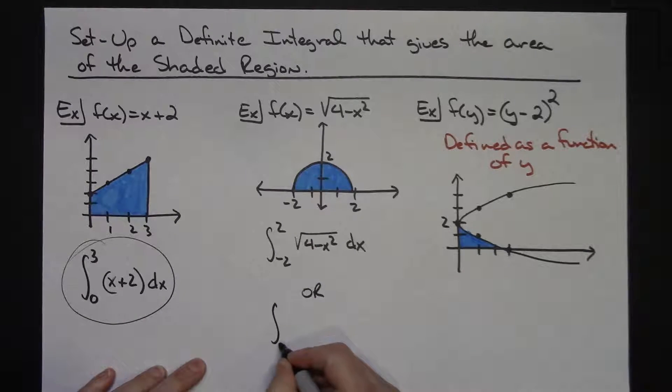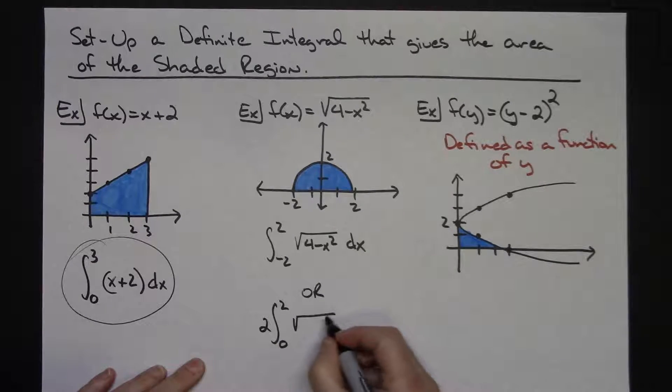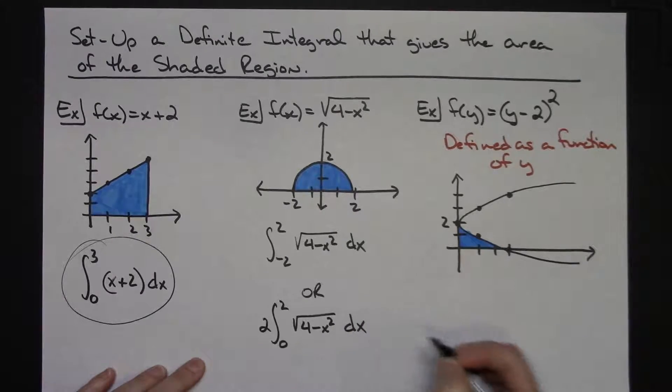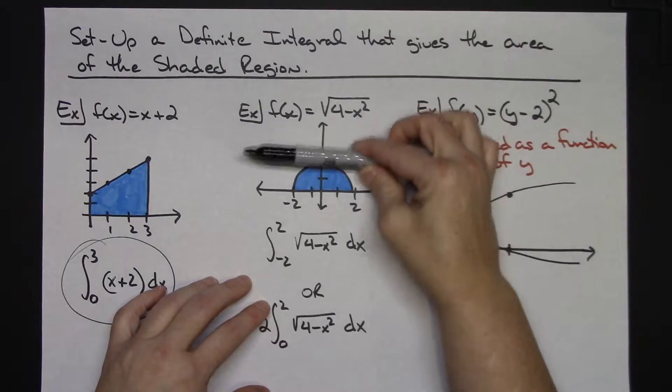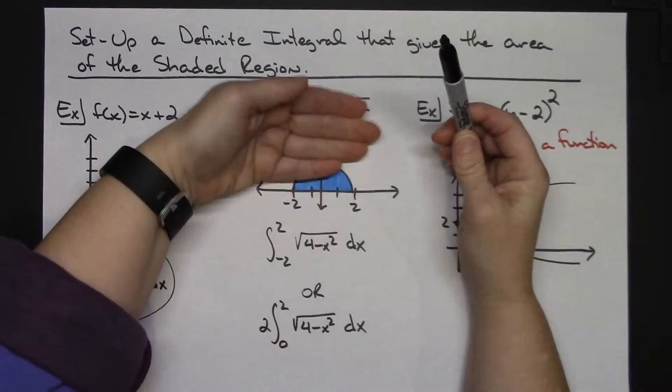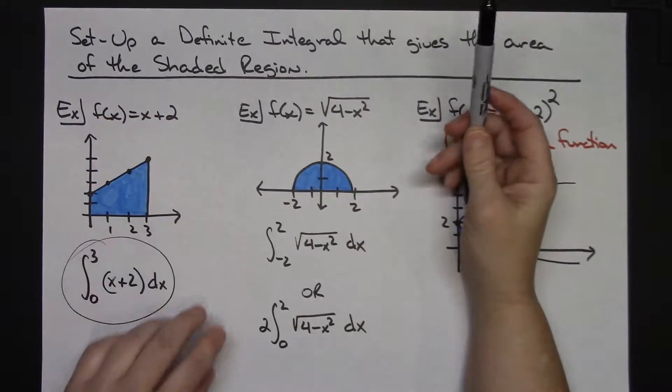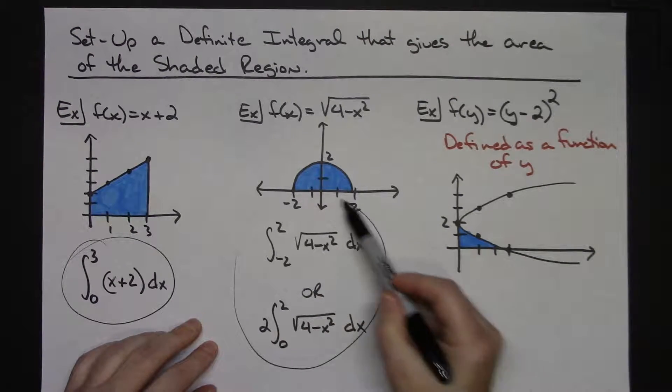So I could run my integral from 0 to 2, I'm going to multiply the whole entire thing by 2. I still have to put the function in there, so square root of 4 minus x squared, and then dx. This works because it's symmetrical, and I am all above, this whole entire picture is totally above that x-axis. Everything is positive here, so this works.